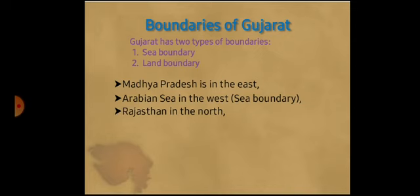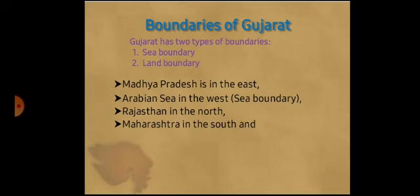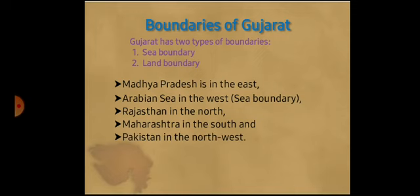Next one: Rajasthan is in the north — that is land boundary. Maharashtra is in the south — land boundary. Pakistan is in the northwest. These blanks will be asked in your exams, so please write in your textbook page number 36.